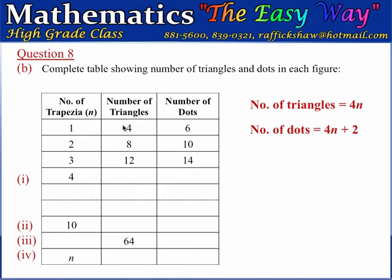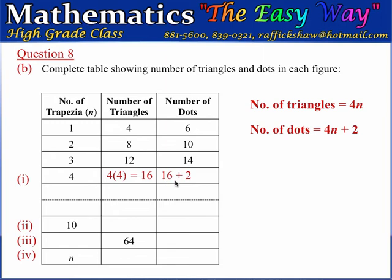When N is 1, the number of triangles is 4 times 1 which is 4, and the number of dots is 4 plus 2 which is 6. When N is 2, the number of triangles is 8 and the number of dots is 8 plus 2 which is 10. When N is 3, the number of triangles is 12 and the number of dots is 12 plus 2 which is 14. For the row where N is 4, the number of triangles will be 4 times 4 which is 16, and the number of dots will be 16 plus 2 which is 18.